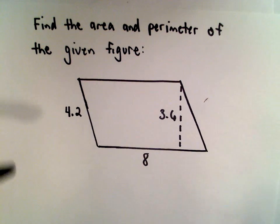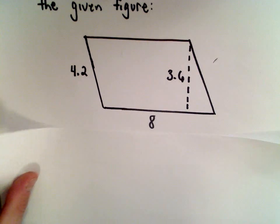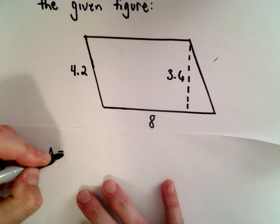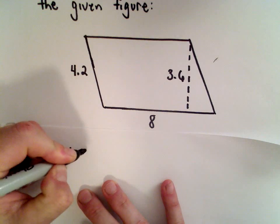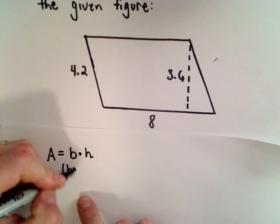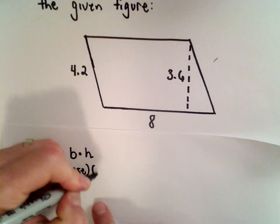To find the area, all you have to remember is that the area formula for a parallelogram is the length of the base multiplied by the height.